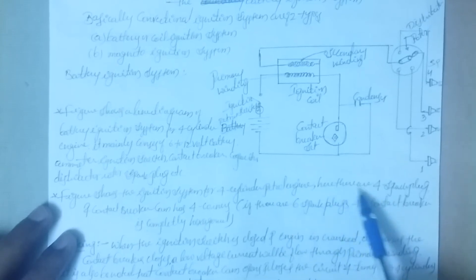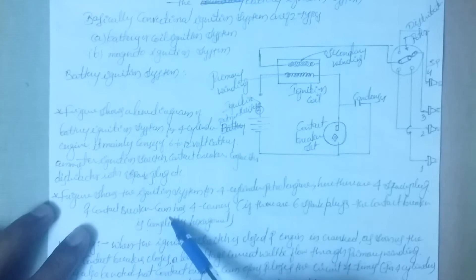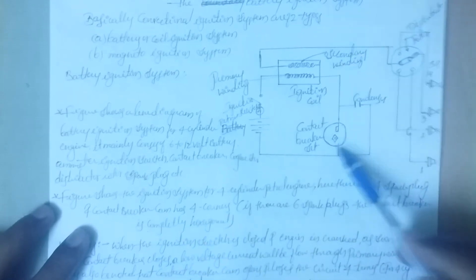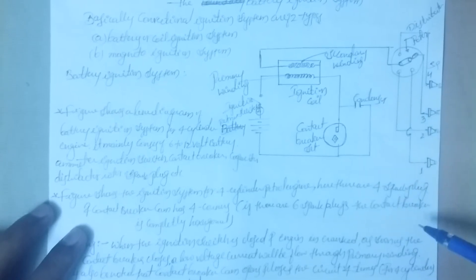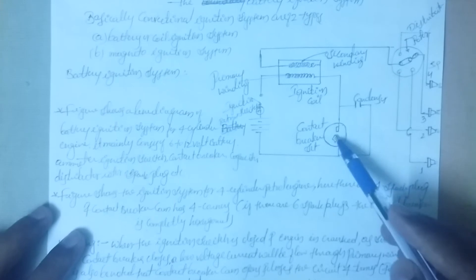For the four cylinder engine, there are four spark plugs and the contact breaker cam has four corners. For a six cylinder engine, there are six spark plugs and the contact breaker will be hexagonal in shape.